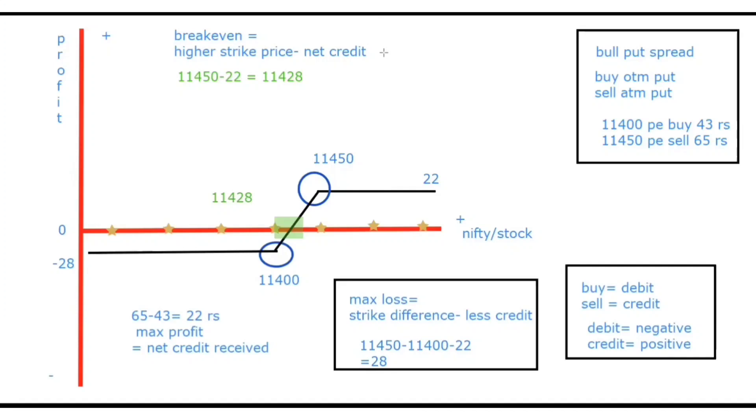So now what does this basic strategy tell us? This tells us that it is a bull put spread. Bull put spread ka matlab yeh hua ki market bullish ho ga toh aap ko ismese paisa milega. How much profit can you get? The net credit. Net credit kitna hai? 22 rupees. Aapka max loss kitna ho ga? Strike price minus net credit. That is 28 rupees. Breakeven higher strike price minus net credit which is 11,428.